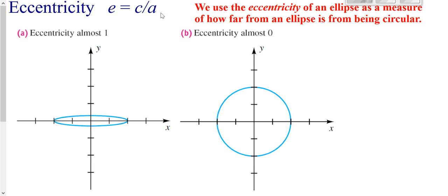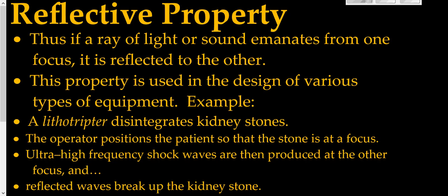How elongated your ellipse is — or how circular it is — is referred to as your eccentricity. It's always the value of c divided by the value of a. Ellipses are nice because if you have something emitted from one focus, it'll bounce off the edge of the ellipse directly to your other focus. That's what happens when we try to disintegrate kidney stones: you have the emitter at one focus, put your kidney stones at the other focus, and use a high-frequency shockwave to break up the kidney stone.